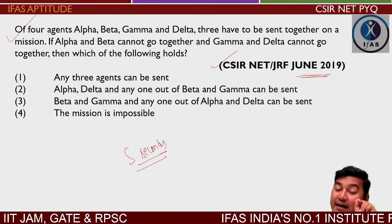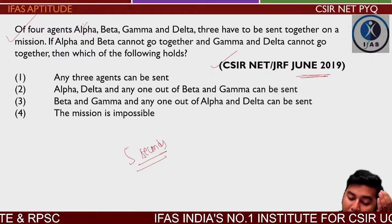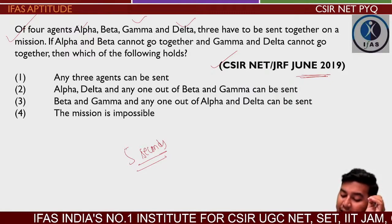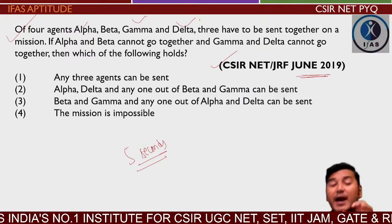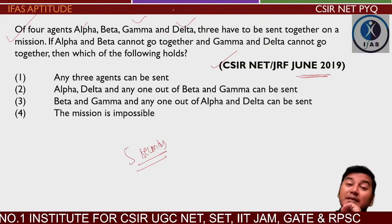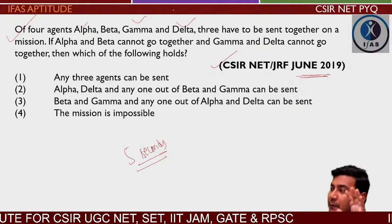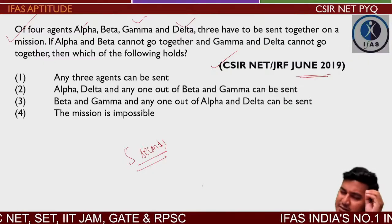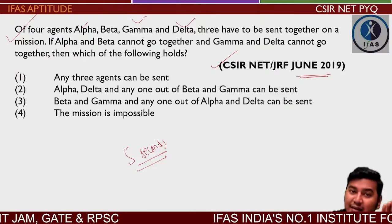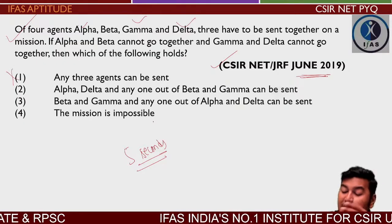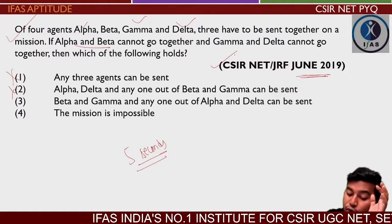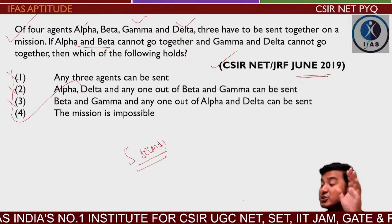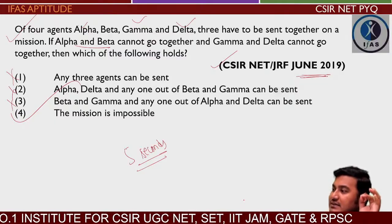Alpha and beta cannot go together. So if you try alpha, gamma, delta — but gamma and delta cannot go together either. Similarly, beta, gamma, delta — gamma and delta cannot go together. Any combination of three from the four agents fails due to the constraints. So the mission is not possible. This is how you should solve it — going through the options logically.